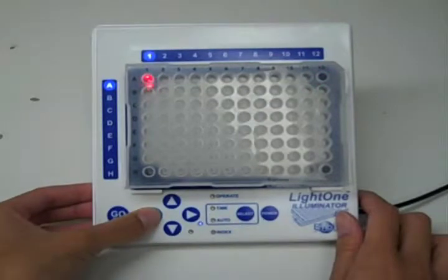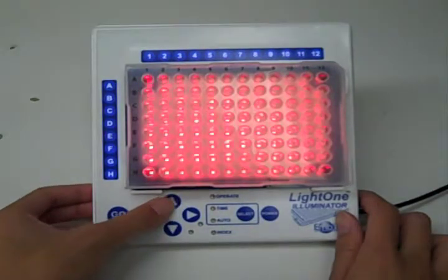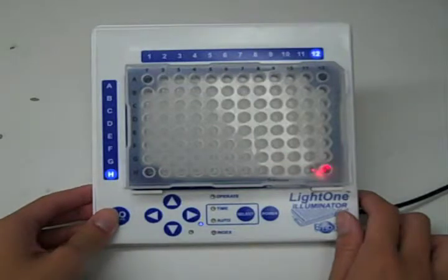To illuminate the entire field, just press left once and up once. To get to the last well, press up and left again, and you're at H12.